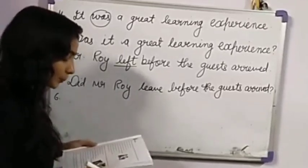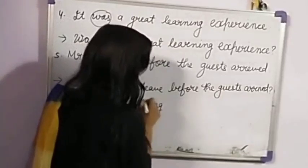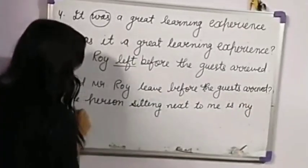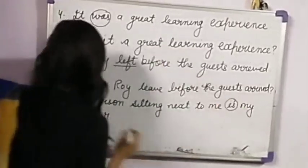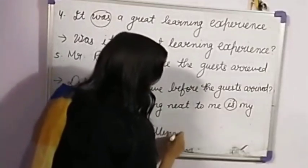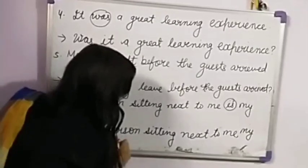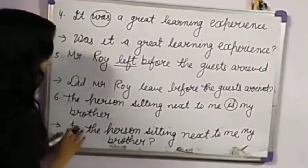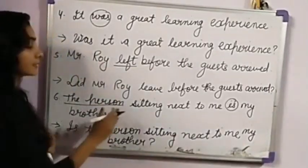Sixth is: 'The person sitting next to me is my brother.' Now we're changing to interrogative. The helping verb is 'is.' So we put 'is' first, then the subject. The answer is: 'Is the person sitting next to me my brother?' And then question mark. We haven't done anything special here — we just put the helping verb first, then the subject, and copied the same sentence.